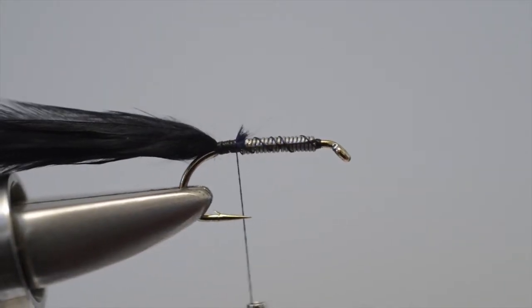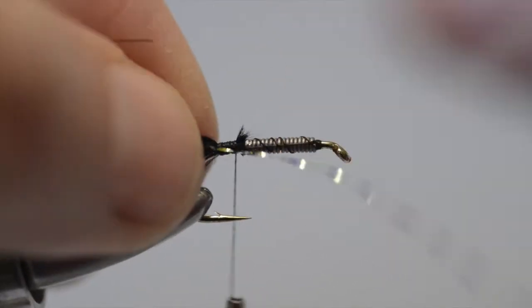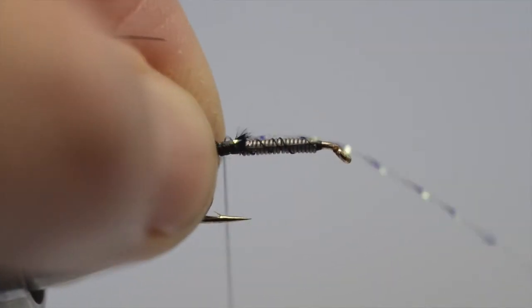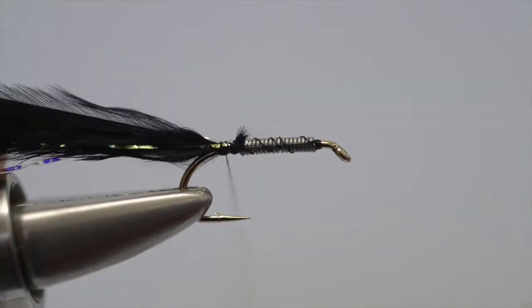The next step is to just add a little bit of sparkle, and this we do by adding a strand, doubled over, of mirror flash. So catch that in, same place, fold it over, and secure it in position.